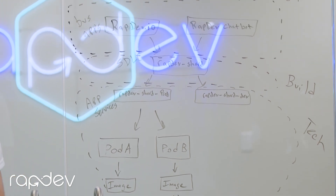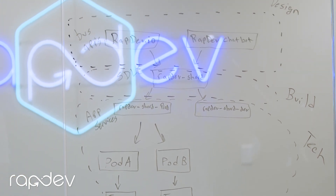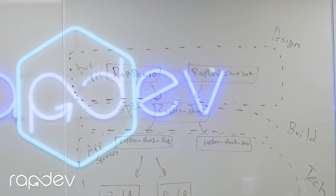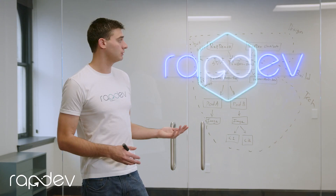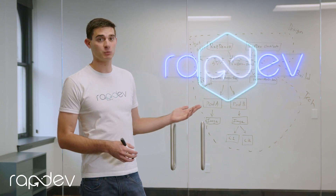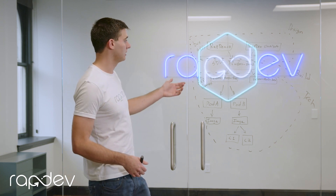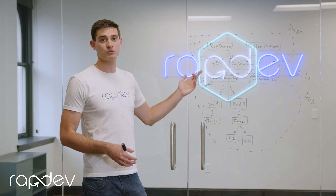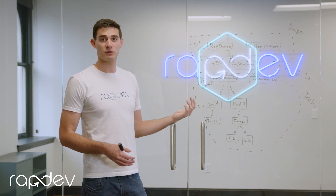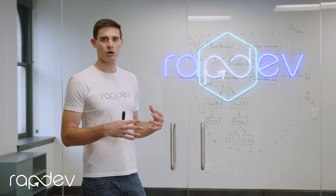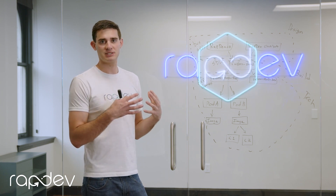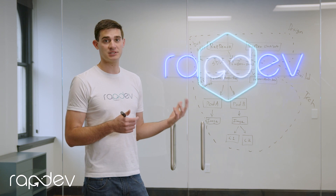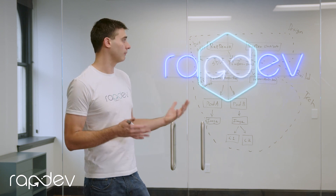ServiceNow recently released the 4.0 version of the CSDM, which came with a new domain — the build domain — and with it the entity, the SDLC component. SDLC components represent microservices, APIs, and those more technical pieces that were actually missing a proper home in the CMDB before this.